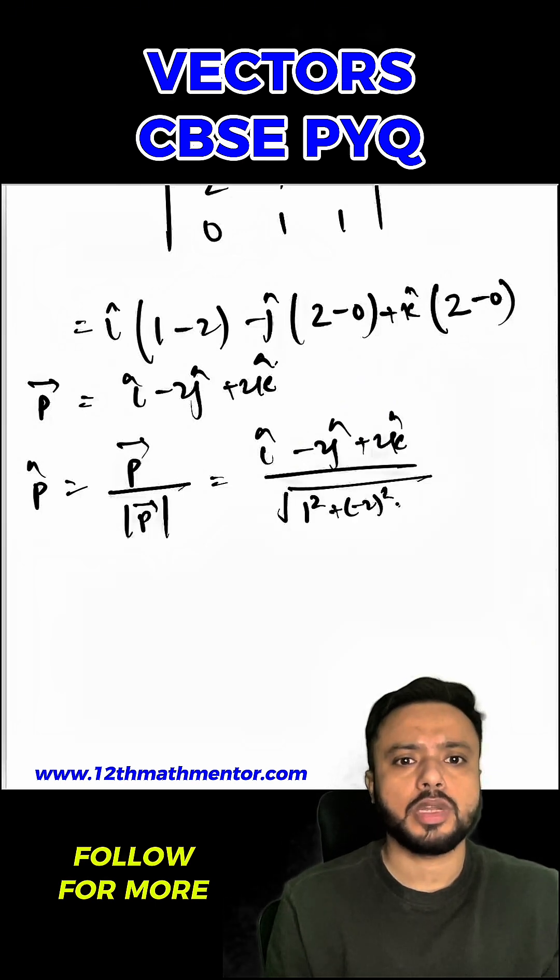upon under root 1 square plus minus 2 square plus 2 square, which would be I cap minus 2 J cap plus 2 K cap upon 9.